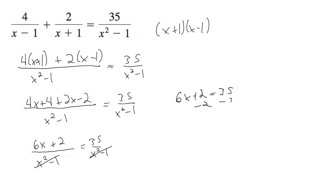Subtract 2 and we get 6x is equal to 33. Divide by 6 is equal to 5.5, or we can just leave it as 33 over 6. Okay, that's it.